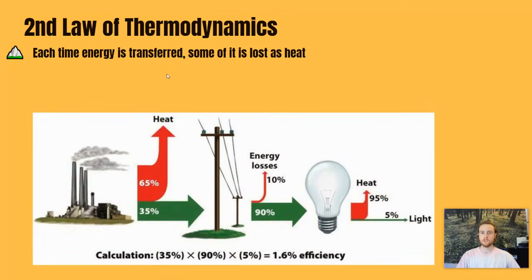Let's look at an example with electricity generation. If we have a coal-fired power plant, only about 35% of the energy in the coal actually makes it to electricity — the other 65% is lost as heat while the coal is burned. Then, as electricity flows down transmission wires, another 10% or so is lost, and only about 90% makes it into your home. When you turn on a light bulb, 95% of the energy is lost as heat, meaning only 5% comes through as actual light energy. Each time we transfer energy from one form to another — from chemical energy in coal to electrical energy to light energy — we lose some of it as heat.